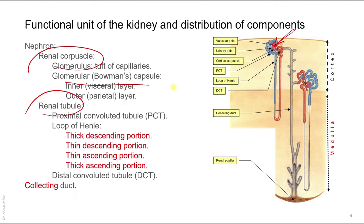The function of the kidney is that it regulates the composition of blood including the ions, blood pH, osmolarity, and glucose. It also regulates the blood volume and blood pressure, produces some hormones, and excretes waste. So the structure of the nephron will allow it to do this.